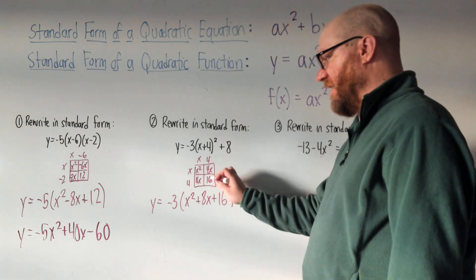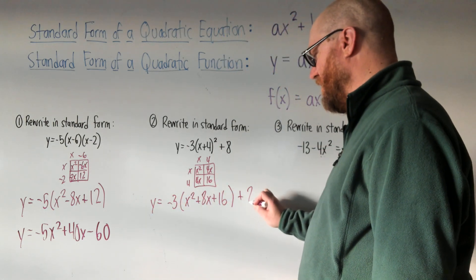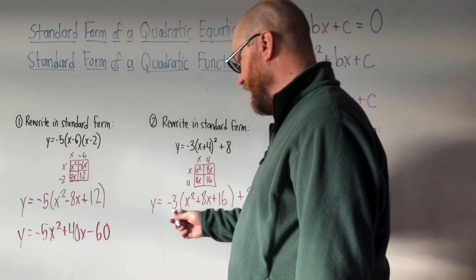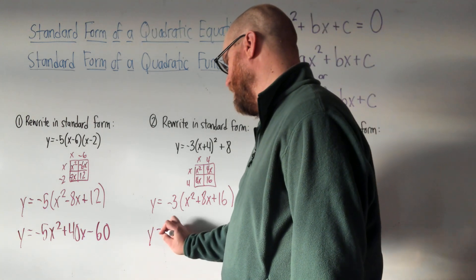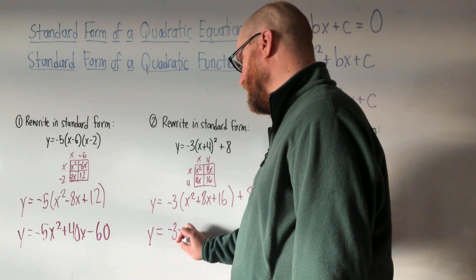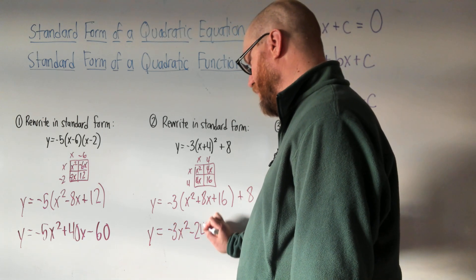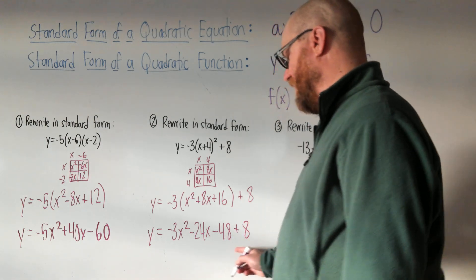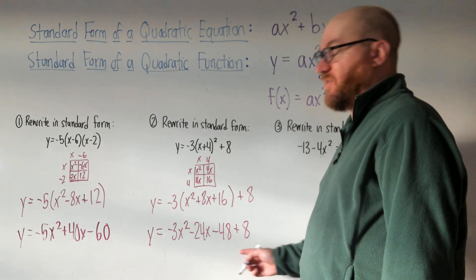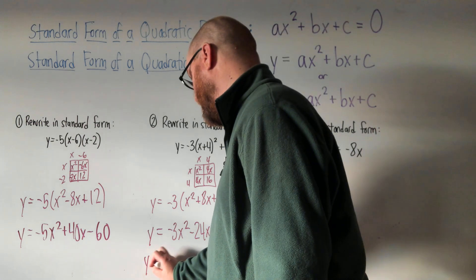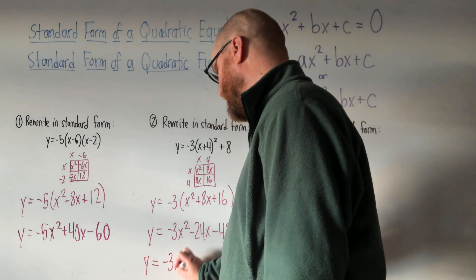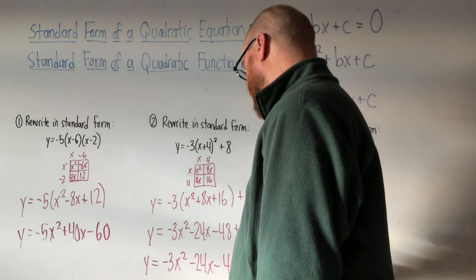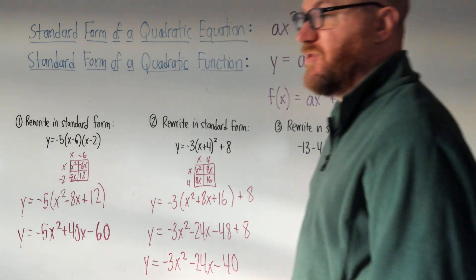Now that we're done with the exponent, we can deal with the negative 3. We distribute it: negative 3 times x squared plus 8x plus 16 gives minus 3x squared minus 24x minus 48. Now let's deal with that plus 8 — combining like terms gives us y equals negative 3x squared minus 24x minus 40. That's the answer to question number two.